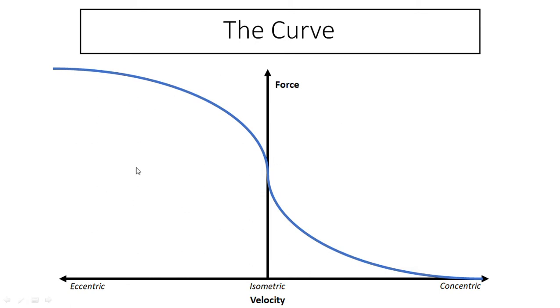The easiest way to understand it is to visually understand this graph here. If we break this down, we have on the vertical axis force, then on the horizontal axis we have velocity. At this point of zero velocity, that is isometric contraction, so that's when we're not even moving.